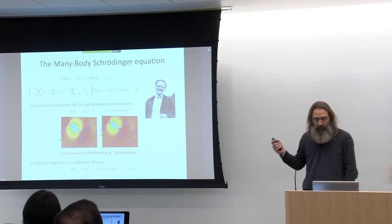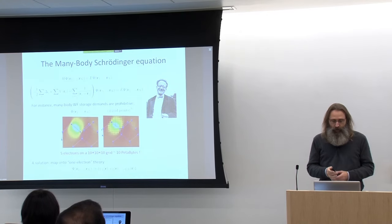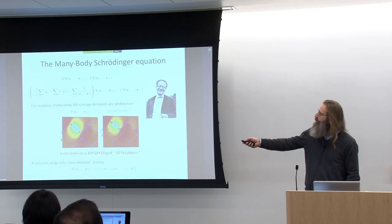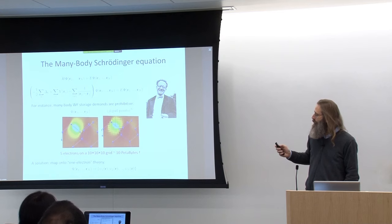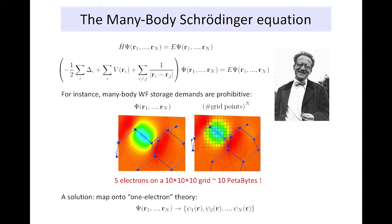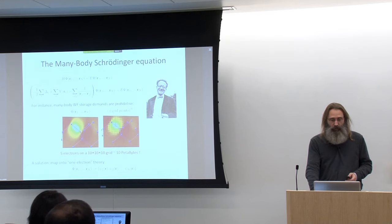The solution we take is to map this many-body object — this wave function that depends on all the spatial coordinates of the electrons in our system — onto a one-electron theory. We would like to cast this object into a group of functions that depend only on one electronic coordinate: a single function for each electron. That's why it takes its name — the one-electron theory.